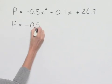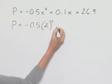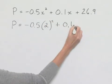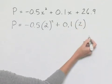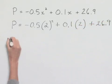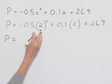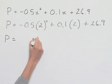So we're going to have negative 5 tenths multiplied times 2 squared plus 1 tenth multiplied times 2 plus 26.9. Now we're going to use order of operations to evaluate this. Notice that we're going to apply the exponent power first. That would give us a 4.